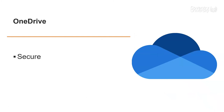Firstly, OneDrive. This is cloud storage where you can securely store your documents. Because it's in the cloud, you can access them from anywhere just using your university student email and password to log in. You can access them on your laptop, on a phone, on a tablet, on a university PC — just using your username and password. No one else can access them unless you choose to share a document, which you can do.